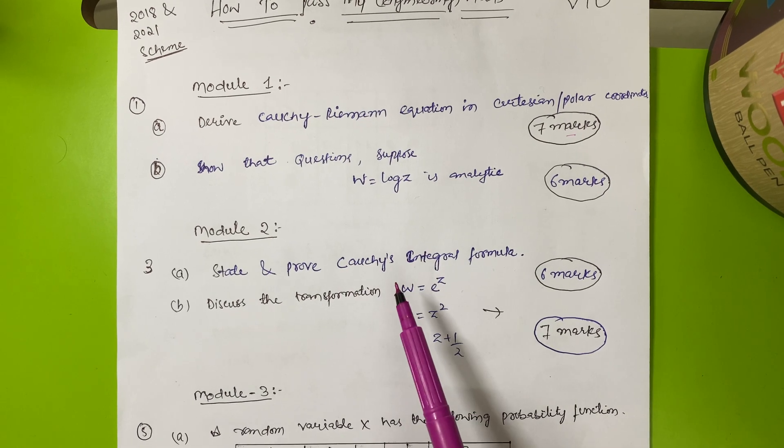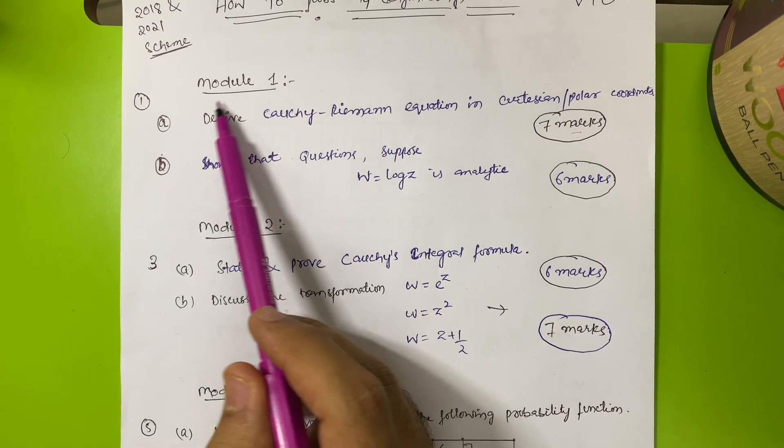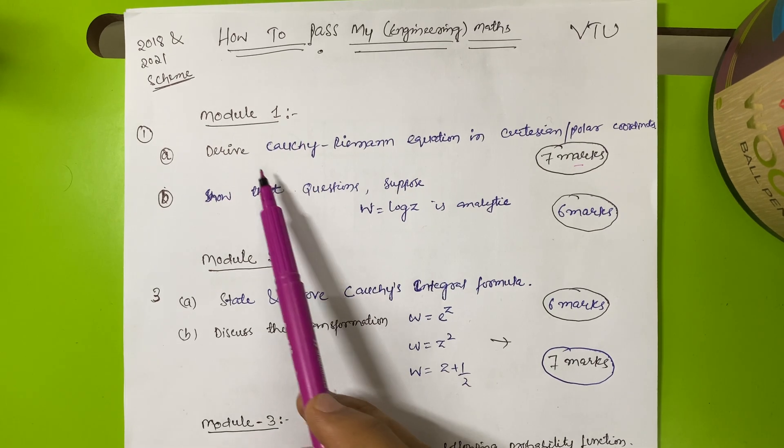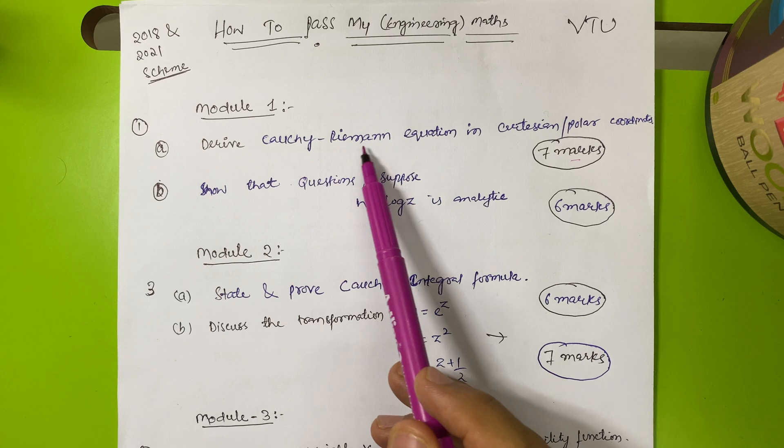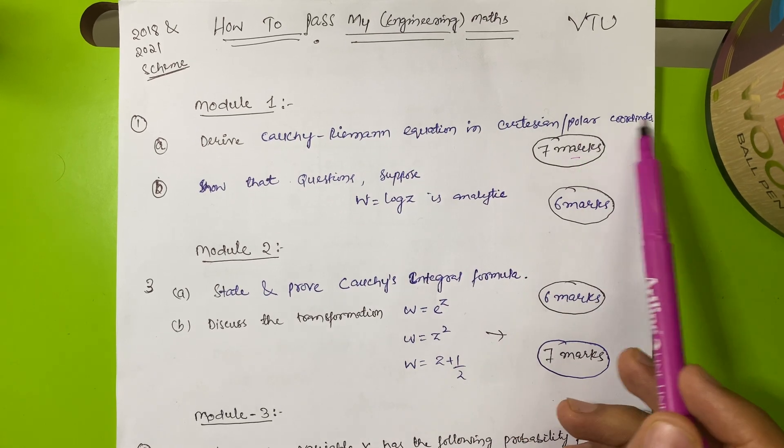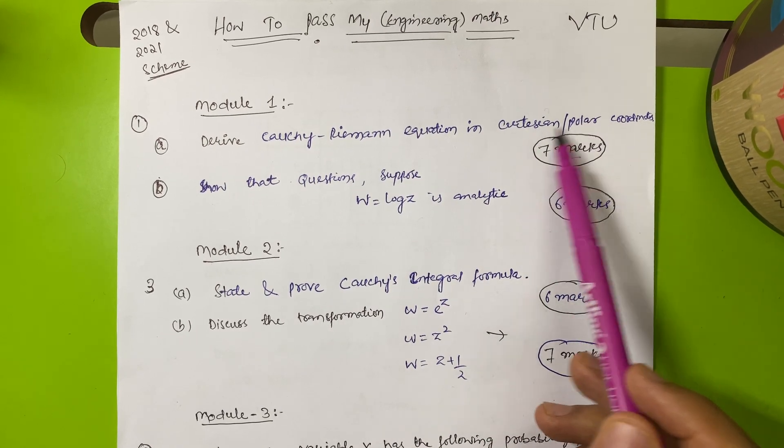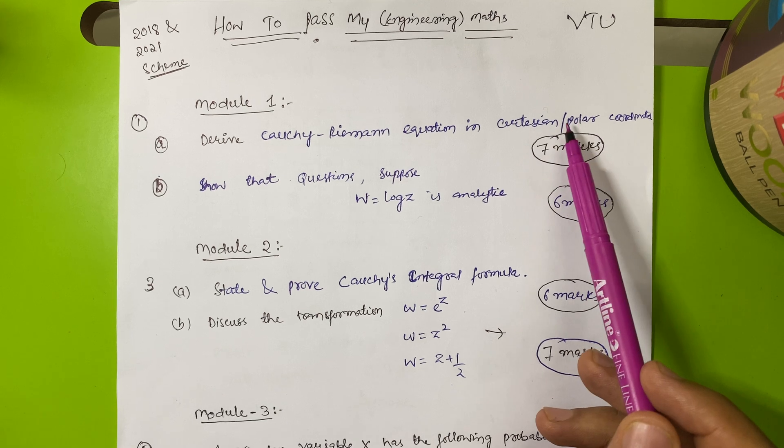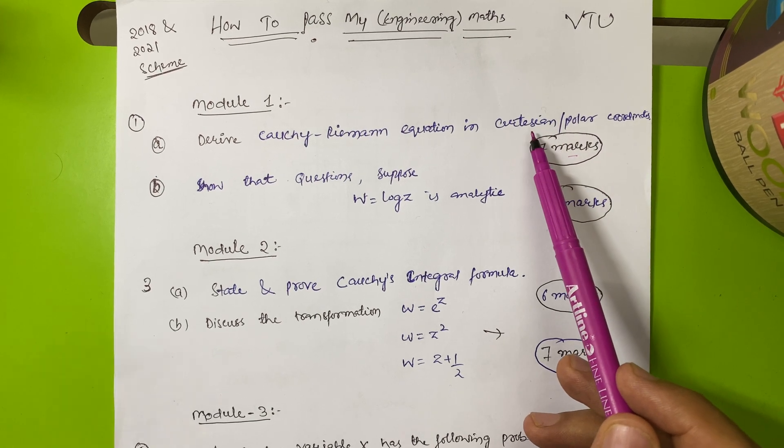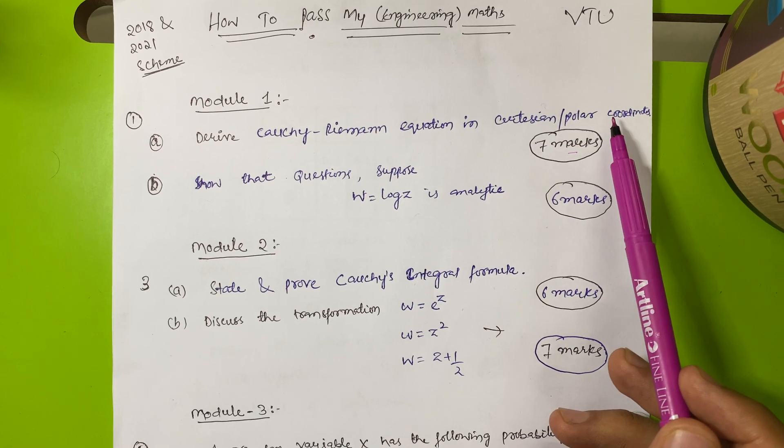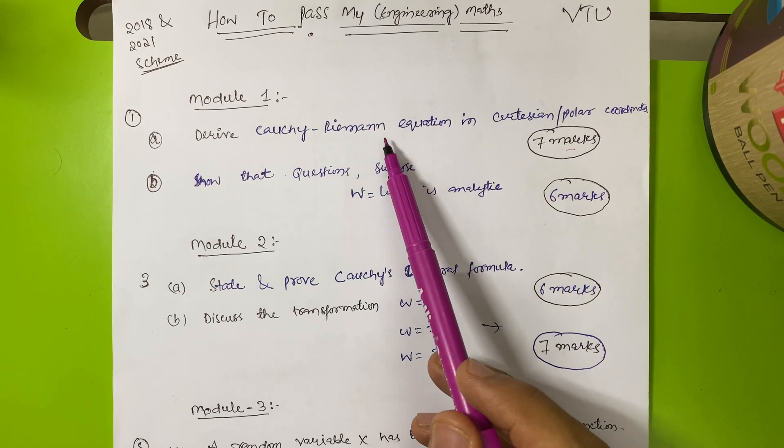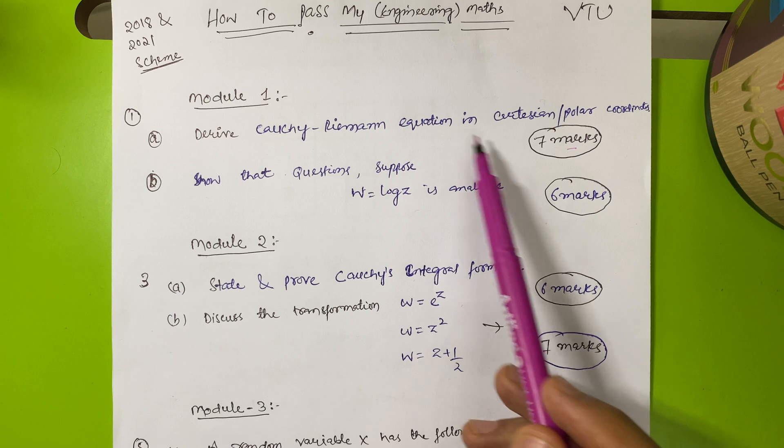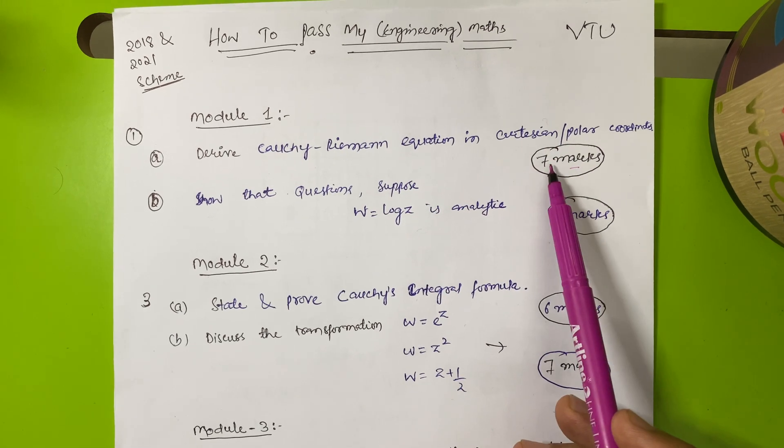Look at here in module first, this is the definite question: derive Cauchy-Riemann equation in Cartesian coordinates or polar coordinates. They may ask you either one. You have to be prepared, you have to remember this Cauchy-Riemann equation. This is the most frequently asked question in VTU examination. This carries seven marks.